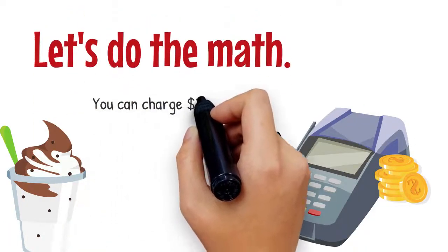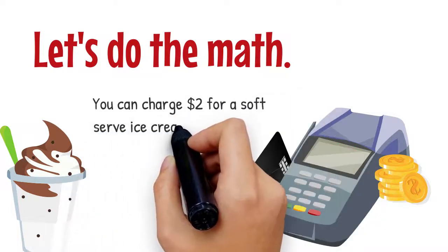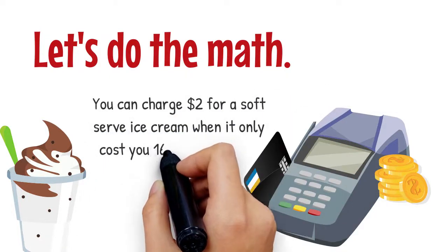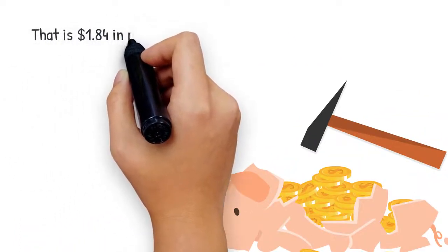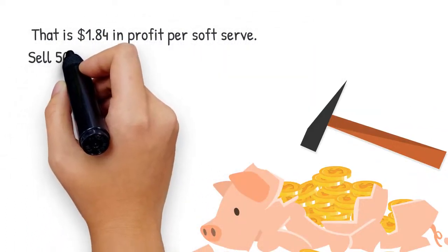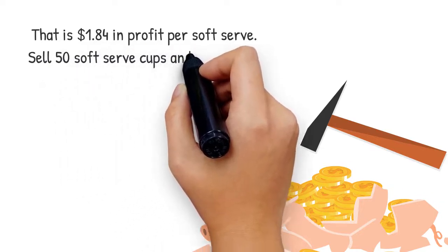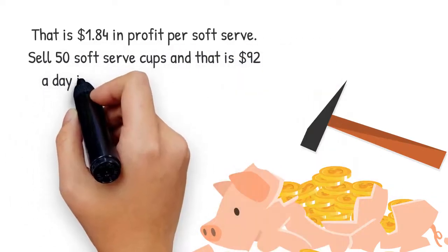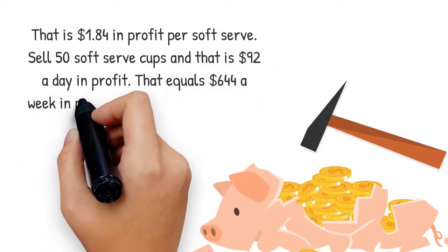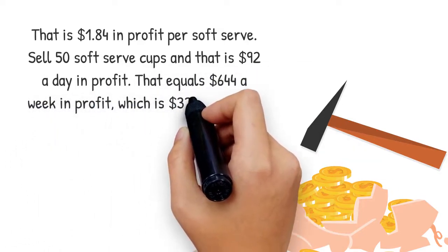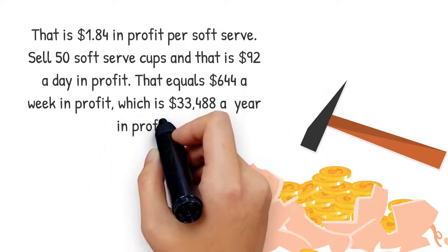Let's do the math. You can charge $2 for a soft serve ice cream when it only costs you 16 cents to make. That is $1.84 in profit per soft serve. Sell 50 soft serve cups and that is $92 a day in profit. That equals $644 a week in profit, which is $33,488 a year in profit.